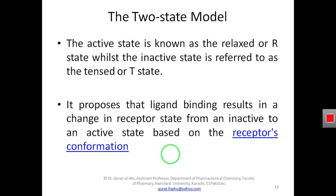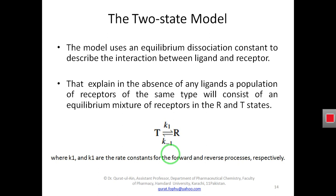This theory uses an equilibrium dissociation constant to describe the interaction between the ligand and the receptor. This dissociation constant explains that in the absence of any ligand, the receptor will consist of an equilibrium mixture of receptors in both R and T states. The two-state model describes two receptor states: one is the R state (the relaxed state) and the other is the T state (the tense state). The drug will bind with the R state, stimulate the intracellular activity of the receptor, and enable it to perform its work.